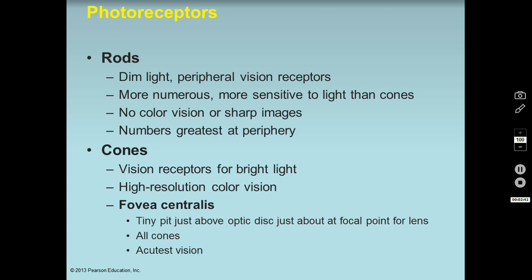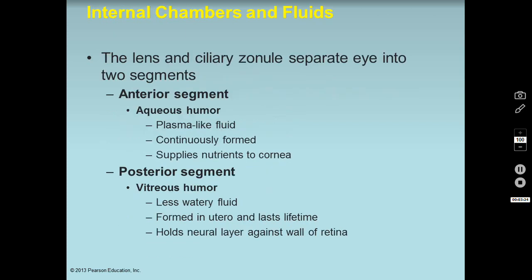There's a neat place in the back of the eye — a little pit just above the optic disc — called the fovea centralis. It's right at the focal point for our lens, just about where light strikes the retina when focused by the lens. In the fovea centralis it's all cones, no rods, and it is the point on the retina with the acutest vision. Our lens will often change shape to get light to strike right at that fovea centralis.